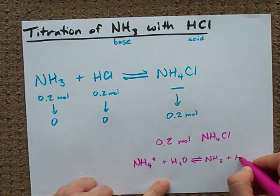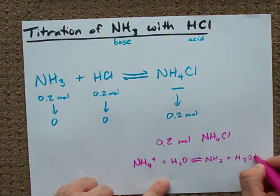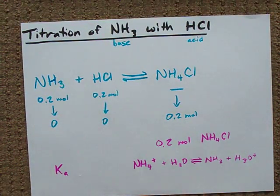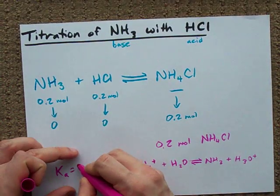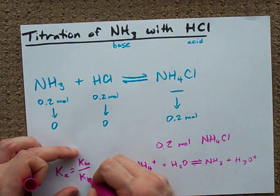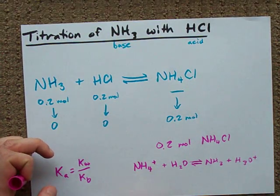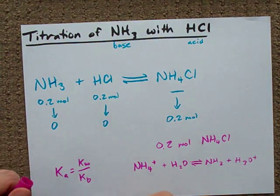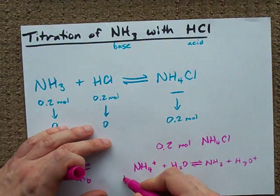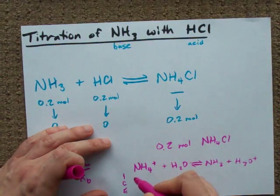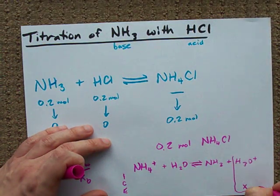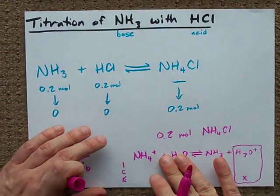You can find a Ka for this reaction, which honestly is probably going to be Kw divided by the Kb for ammonia, which happens to be 1.8 times 10 to the minus 5, if you're working along at home, and doing an ice table for this reaction, solving for X, which will end up being your concentration of H3O+, and that's how you're going to find the pH.